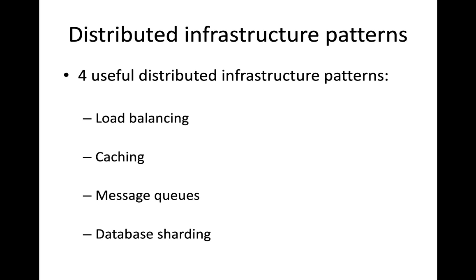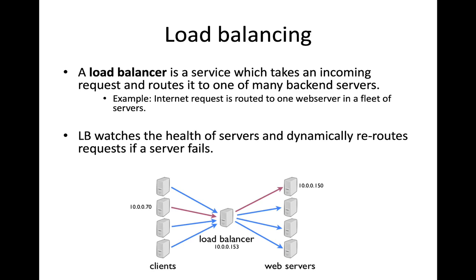Let's start out by looking at four common patterns that you will encounter when building out distributed infrastructure in the cloud. And these four patterns include load balancing, caching, message queues, and database sharding.